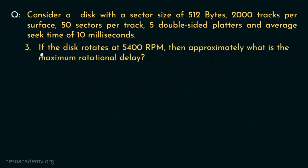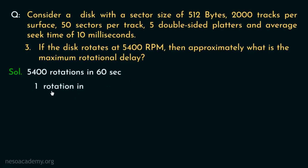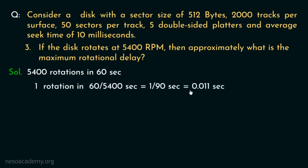Moving to question 3: if the disk rotates at 5400 RPM, what is the maximum rotational delay? 5400 RPM means 5400 rotations in 60 seconds, so one rotation takes 60/5400 = 1/90 seconds. Since the maximum rotational delay equals the time for one full rotation, the maximum rotational delay is approximately 0.011 seconds.